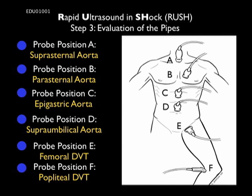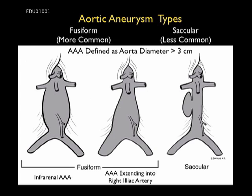The next step in the evaluation of the pipes is performed through looking at the abdominal aorta. The probe should be placed in positions C and D in a short axis configuration. Generally we'll begin with the probe high at position C and move all the way down to D to fully examine the aorta. We're looking for an abdominal aortic aneurysm, signaled by an abdominal aorta greater than 3 centimeters in diameter. Most AAAs will be fusiform in nature and also infrarenal, while some may extend down into the iliac artery. A minority of AAAs will be saccular.